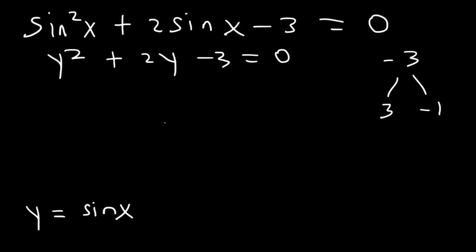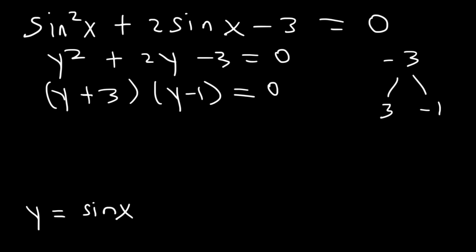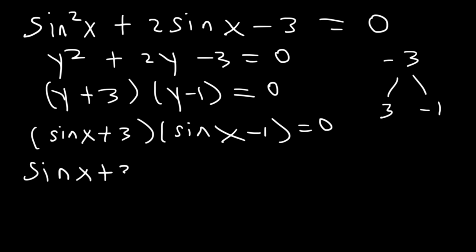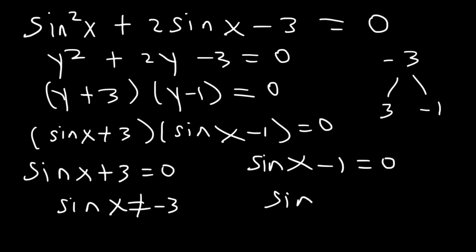This is positive 3 and negative 1. So to factor it, it's going to be y plus 3 times y minus 1. Now we can replace y with sine, so we have sine x plus 3 times sine x minus 1 equals 0. Let's only find the answers in the first quadrant. We set each factor equal to 0. Sine x cannot be negative 3 because the range of sine is from negative 1 to 1. Sine x can equal 1, and we know that sine of pi over 2 is 1, so x is pi over 2. That's the answer.